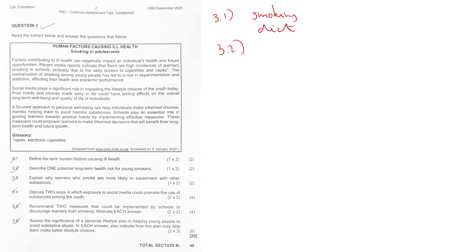3.1 — human factors causing ill health — it's lifestyle choices, basically just smoking and diet, or alcohol abuse, all of that. 3.2, describe one potential long-term health risk for smokers — well, lung cancer. There are others like chronic bronchitis and cardiovascular diseases.